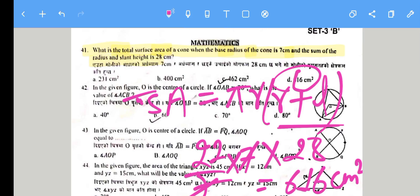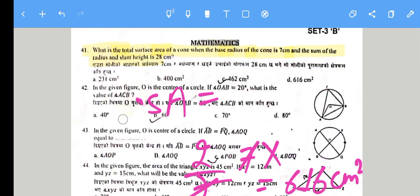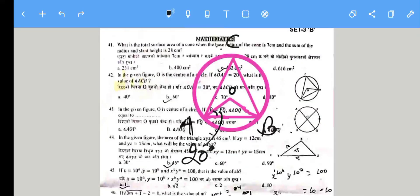Question 42: In the given figure, O is the center of the circle and angle AOB is 20 degrees. Since OA equals OB (both radii), we have an isosceles triangle, so the base angles are equal at 20 degrees each.